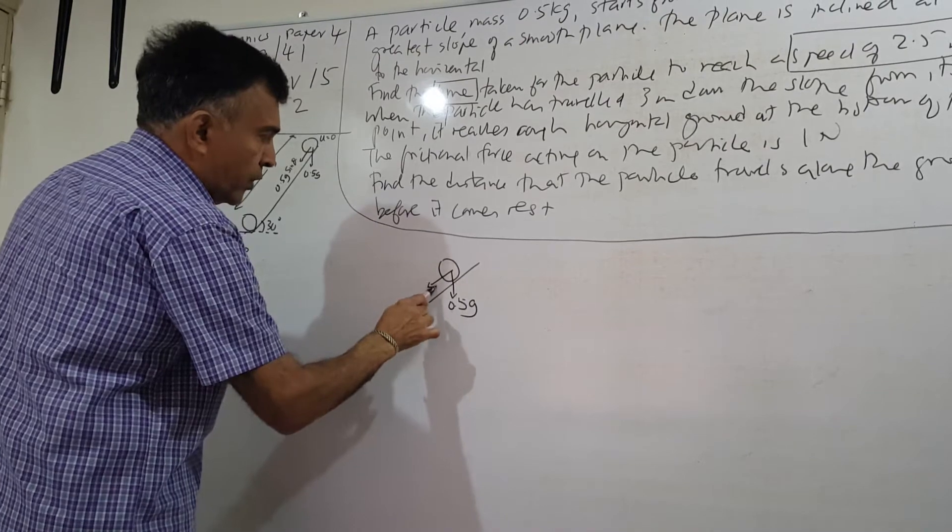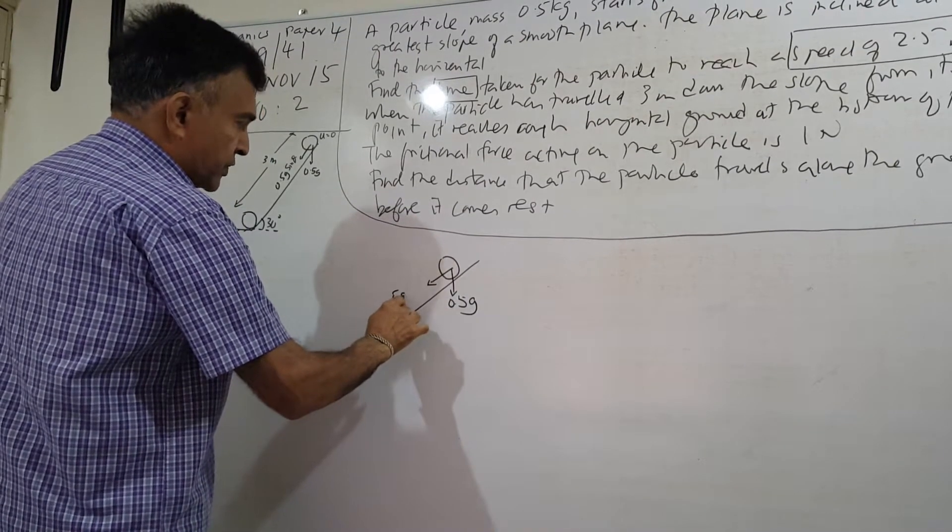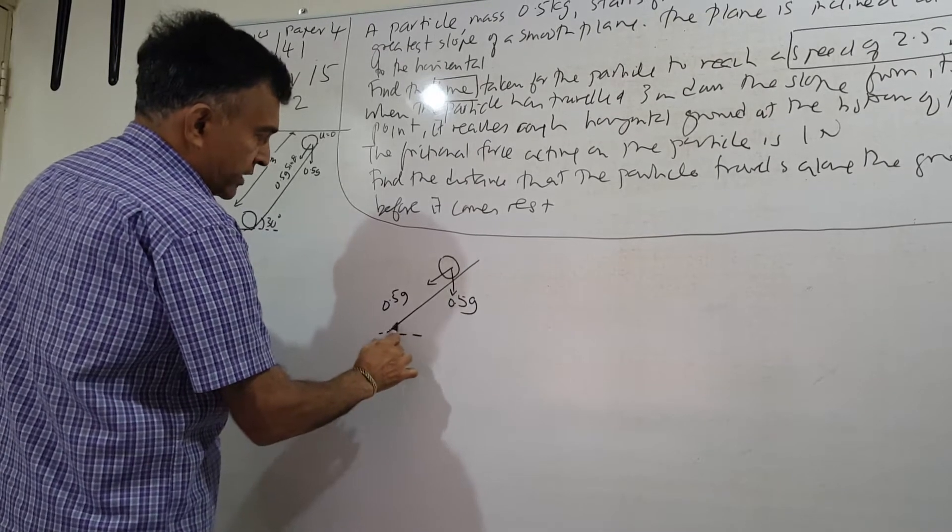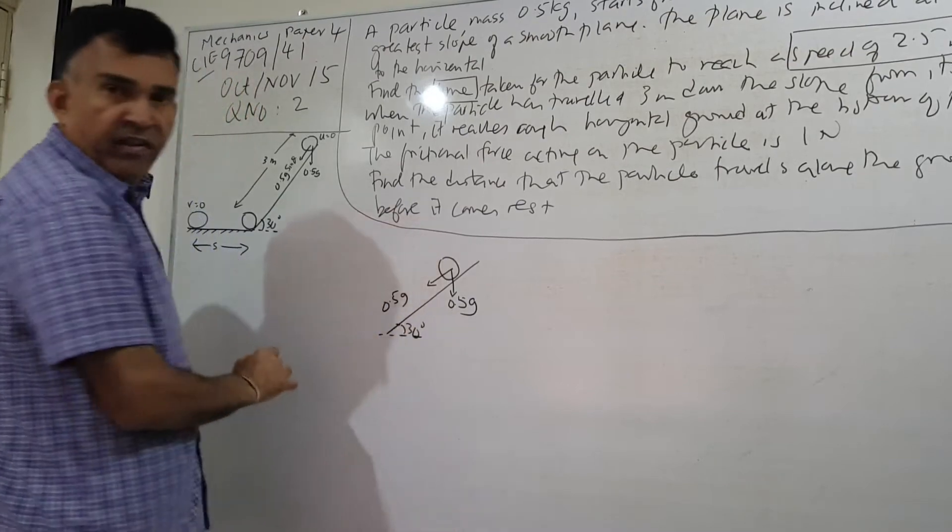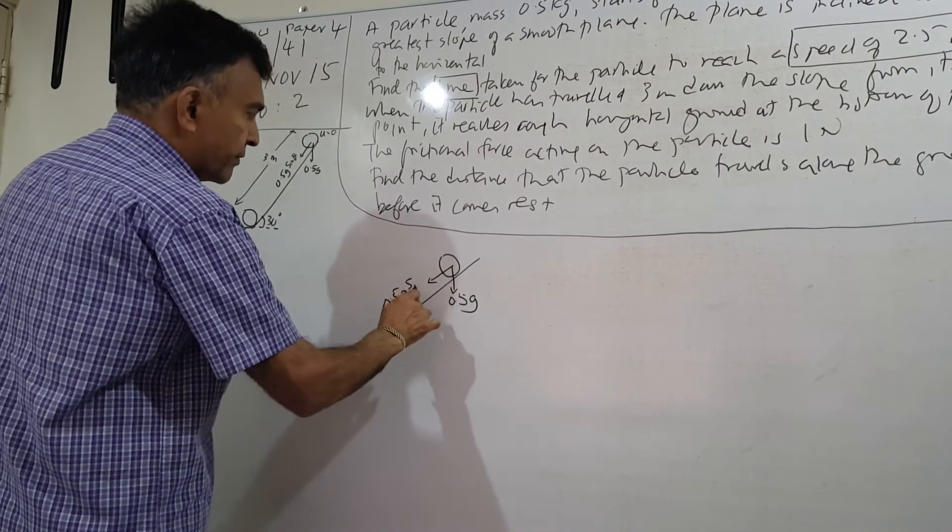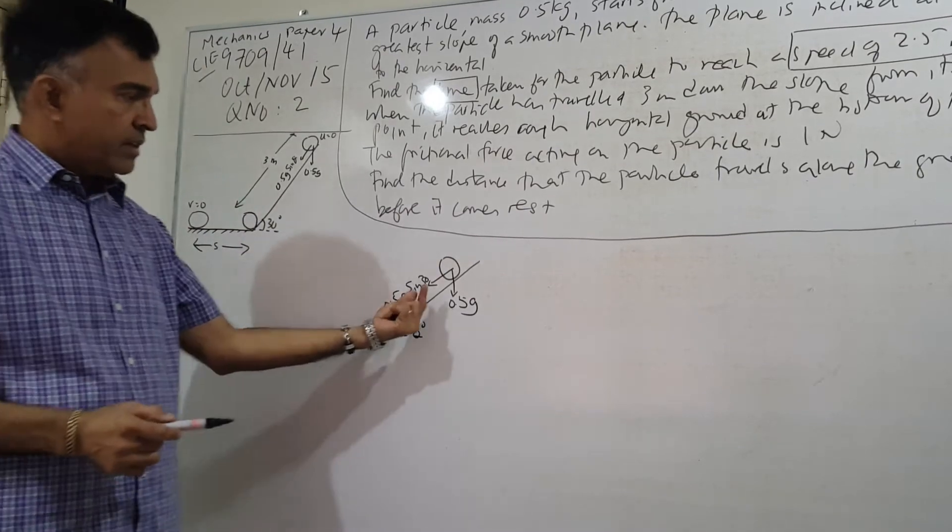Let me indicate the weight. It's 0.5 kg so my weight will be 0.5g newtons. My downward component here of my weight will be 0.5g. Let me indicate 30 degrees here. This is 30 degrees, so this will be 0.5g sine 30. This is the weight component acting parallel to the plane.